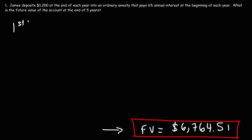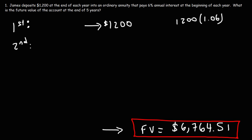At the end of the first year, James deposits $1,200 — that's the account value at the end of year one. At the beginning of the second year, he receives 6% interest, so we multiply $1,200 by 1.06, giving $1,272. He then deposits another $1,200 at the end of the second year, so the account value at the end of year two is $2,472.